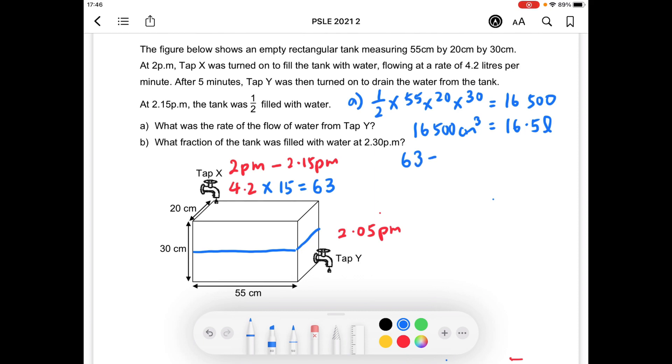63 minus 16.5, we will get 46.5. So 46.5 liters of water has been drained off by Tap Y.